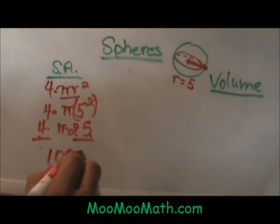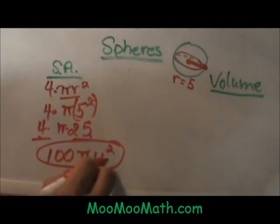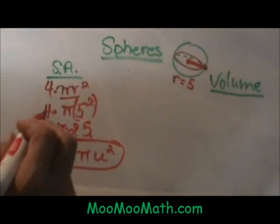Then you just stick the pi next to it and it is 100 pi units squared. Remember to always put your unit in surface area so the area is always squared. Now let's shift over here for a second to volume.